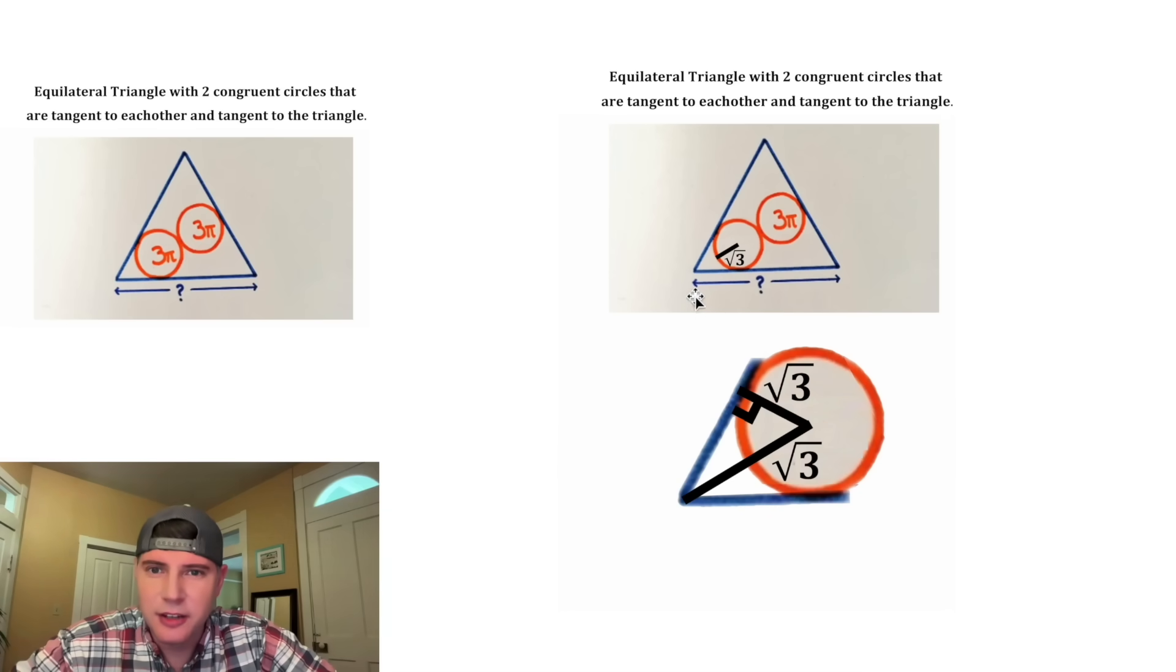And then we also know this angle. Since this is an equilateral triangle, all of these are 60 degrees. And this cuts it in half, making this 30 degrees. And in this triangle, this last angle is 60 degrees. We now have a 30-60-90 triangle.